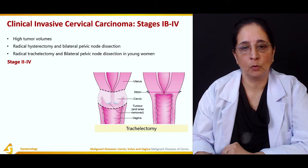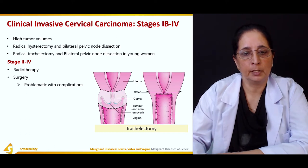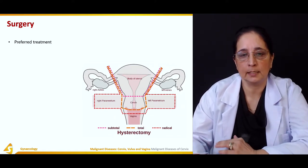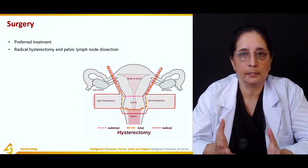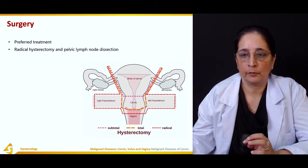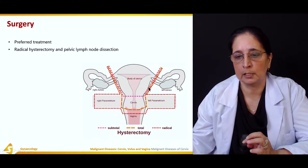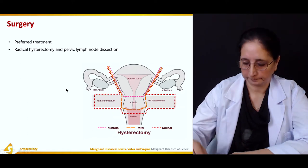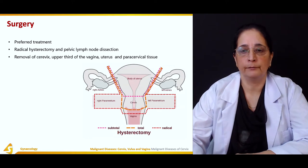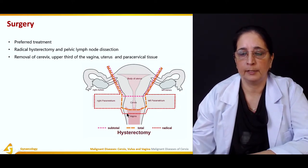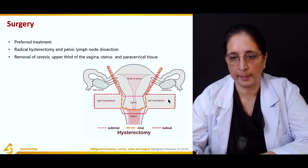For stage 2 to 4, radiotherapy is used when surgery is problematic with complications. The preferred surgical treatment is radical hysterectomy and pelvic node dissection. In radical hysterectomy, the uterus is removed along with the cervix, right and left pelvic node dissection, and parametrium. This includes removal of the cervix, upper third of the vagina, uterus, and paracervical tissue.